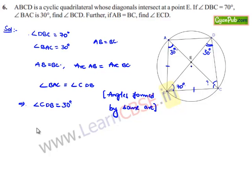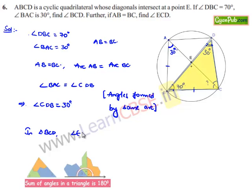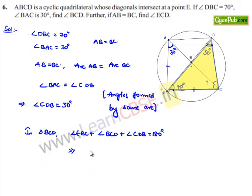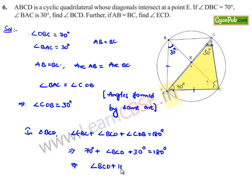Now if we consider triangle BCD, the sum of angles is 180 degrees. Therefore angle DBC plus angle BCD plus angle CDB equals 180 degrees, that is 70 degrees plus angle BCD plus 30 degrees equals 180 degrees. This gives angle BCD plus 100 equals 180, so angle BCD equals 80 degrees.